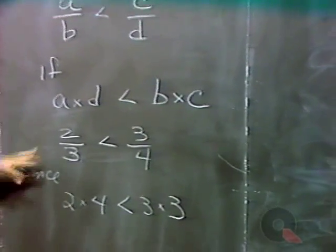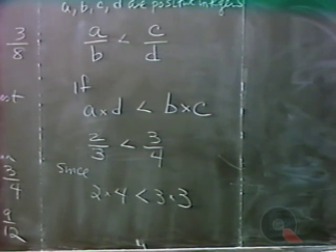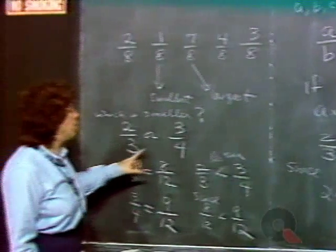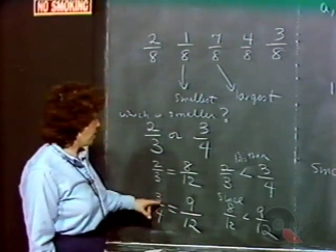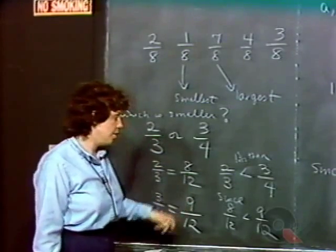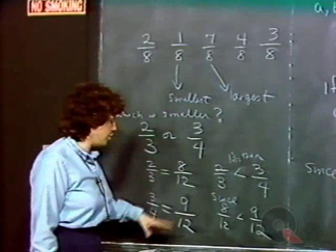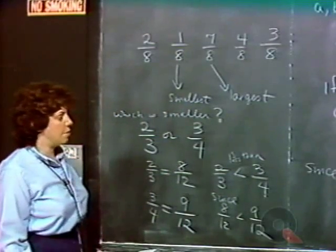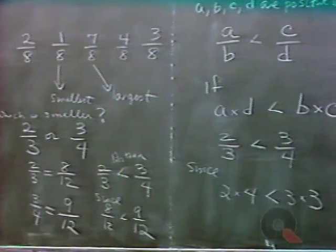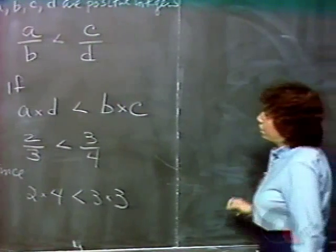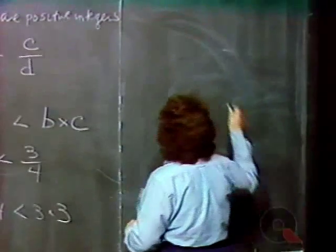Two-thirds was less than three-quarters since two times four is less than three times three. In general, that'll be easier than actually doing the work of combining over the lowest common denominator. Very often on the assessment test, you'll be given a group of five fractions and asked to pick out the smallest — or the largest. Let's try an example.